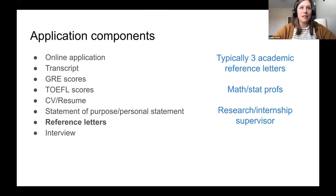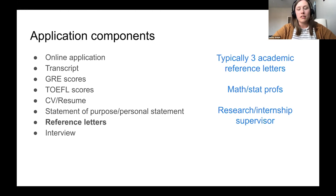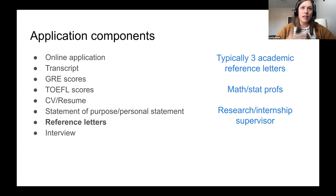Perhaps one of the most important pieces of your application is reference letters. Typically schools ask for three academic reference letters from math and stats professors, research supervisors, or internship supervisors. You want people who know you well — as a student, a person, and an employee — who can really comment on your potential in this field. Finding people with relevant experience is useful.